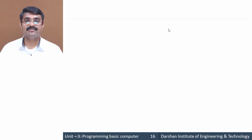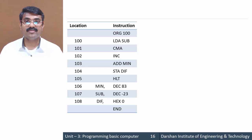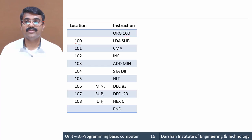Now let's look at a sample assembly language program. You can see ORG 100 — that is a pseudo instruction which is not going to be executed by the computer. ORG 100 indicates to the assembler program that our program will start from memory location 100, where our first instruction is stored.